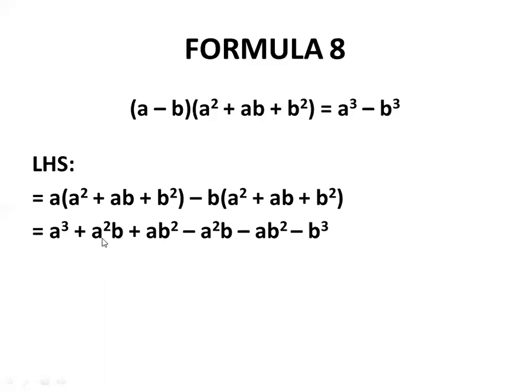This a²b and minus a²b, both will be cancelled. Plus ab² will go with minus ab², both will be cancelled. We will be left with a³ - b³ and this is our right hand side.